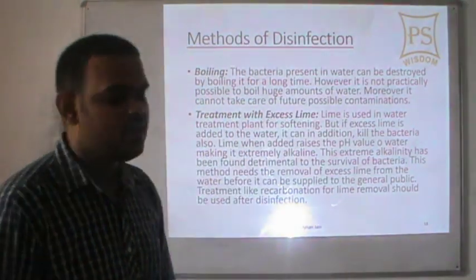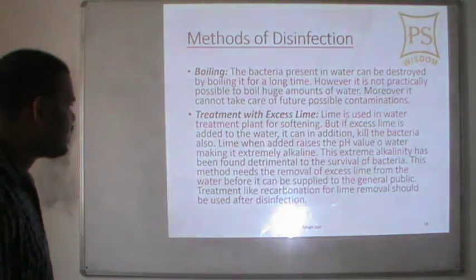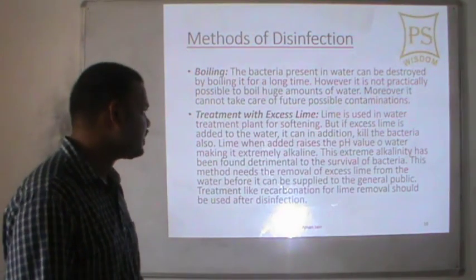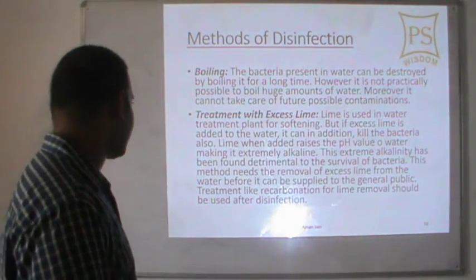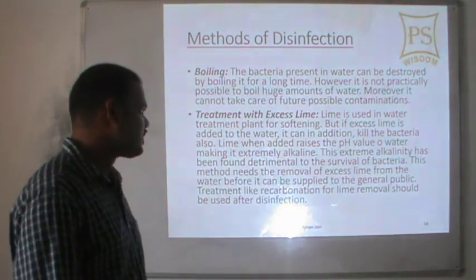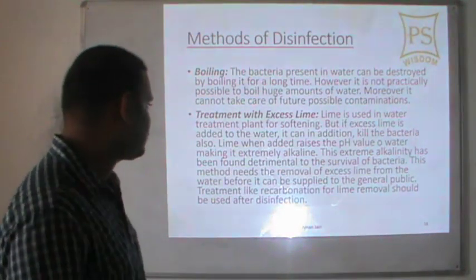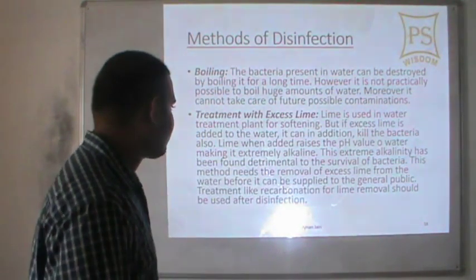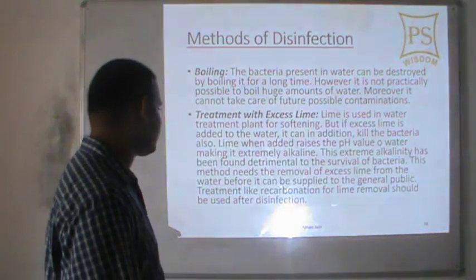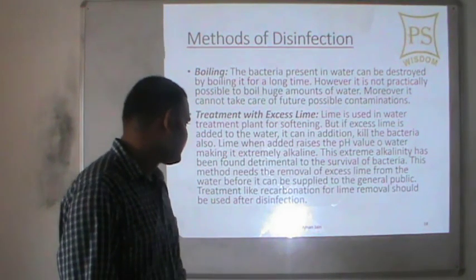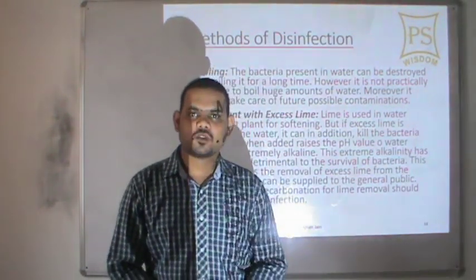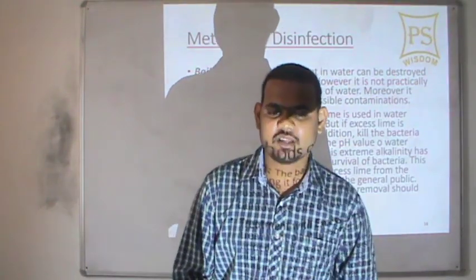Treatment with excess lime: lime is used in water treatment plants for softening, but if excess lime is added to the water, it can also kill bacteria. Lime raises the pH value of the water, making it extremely alkaline. This extreme alkalinity has been found detrimental to the survival of bacteria. However, the excess lime must be removed from the water before it is supplied to the public. Recarbonation is used for lime removal after disinfection.